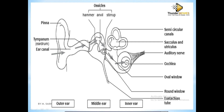There are three bones in the ear — the ear has the smallest bones in the body. The first one is called the hammer, the anvil, and then the stirrup. But we prefer calling them the malleus, the incus, and then the stapes. These three bones we call the ossicles — the three bones found in the ear. They are very important in amplifying the sound.